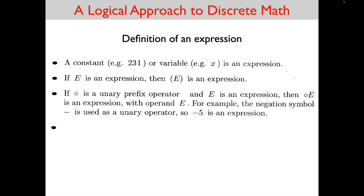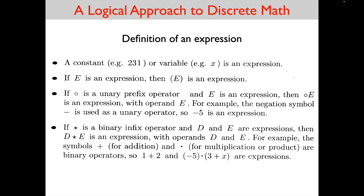This circle can represent any unary prefix operator. The example given here is the hyphen: since 5 is an expression because it is a constant, and hyphen is the negative sign placed in front of 5, hyphen 5 is an expression. The fourth part of the definition is: if star is a binary infix operator and capital D and capital E are expressions, then D star E is an expression with operands D and E. Notice that the binary infix operator sits in between the two operands, whereas the unary prefix operator comes in front of its operand.